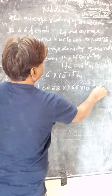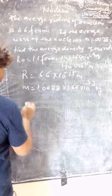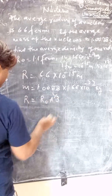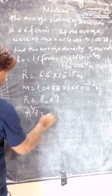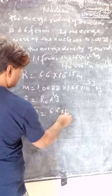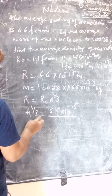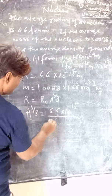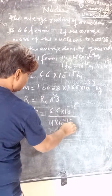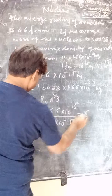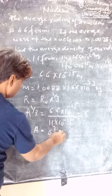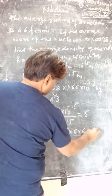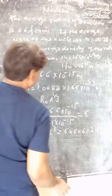We know that r = r₀ · A^(1/3), therefore A^(1/3) = r / r₀ = (6.6 × 10⁻¹⁵) / (1.1 × 10⁻¹⁵) = 6. Therefore A = 6³ = 6 × 6 × 6 = 216.